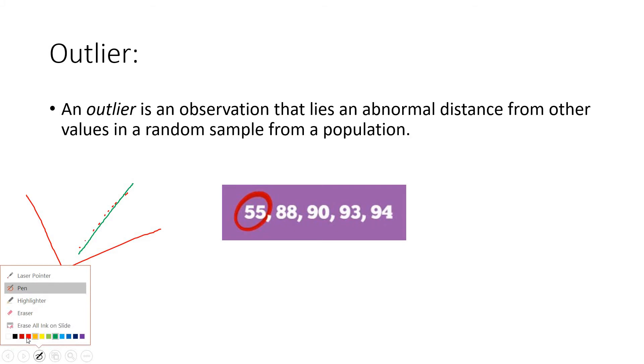But suppose due to some mistake one outlier comes, and due to that, to fit all the data points properly, your predicted linear regression line may go like this. This may lead to wrong results, so we should always remove the outliers from our dataset before training.